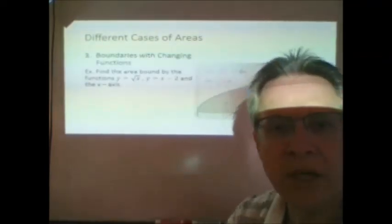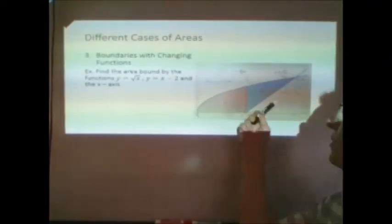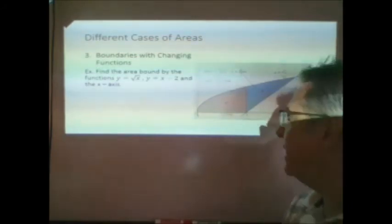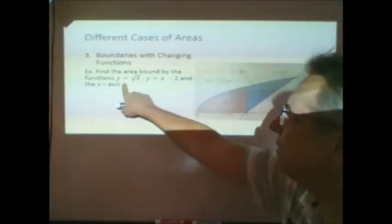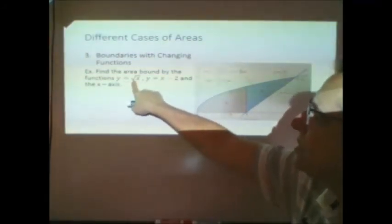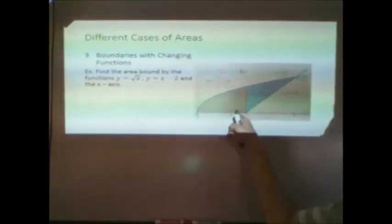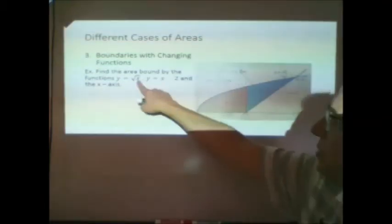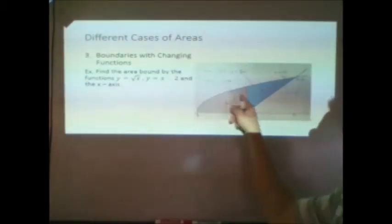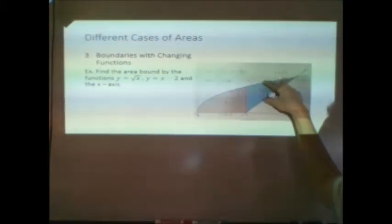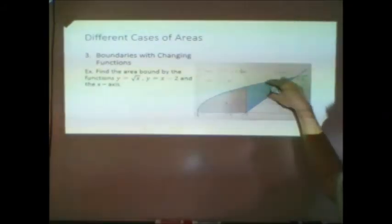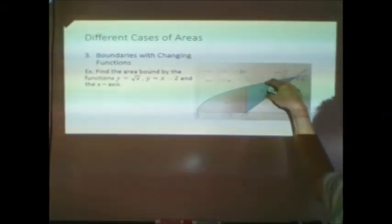So, the third case is where we have boundaries that change. And, for instance, if you needed to find the area bound by the functions y equals square root of x, y equals x minus 2, and the x-axis, if you plot those, you'll see that you can't just do this one minus this one. Because, while that would give you the area from 2 to 4, the b region, you wouldn't get the right area in this region because it says bound by the x-axis.